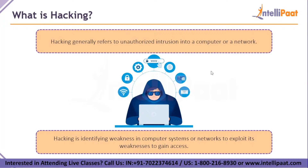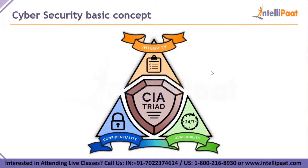Now that we know what cybersecurity and hacking are, let's see some basic concepts of cybersecurity. Cybersecurity basically consists of three components: integrity, confidentiality, and availability. Together, these three principles form the cornerstone of any organization's security infrastructure. In fact, they function as goals and objectives for every security program.